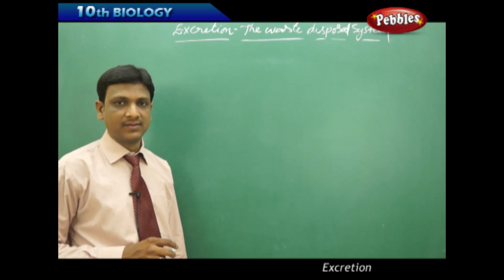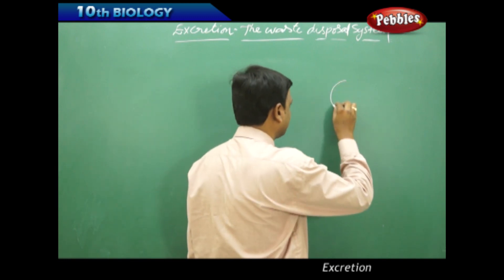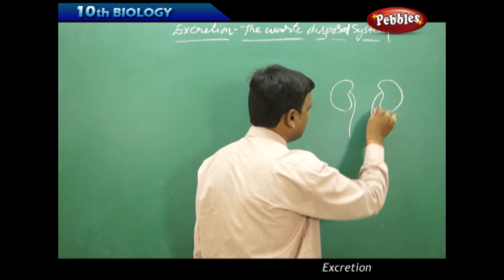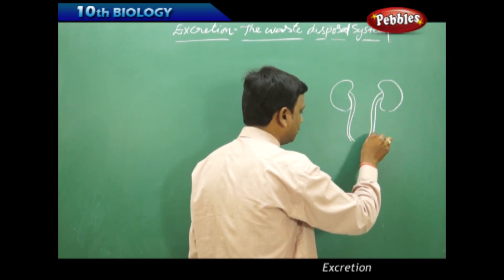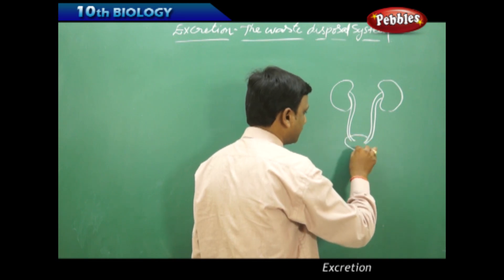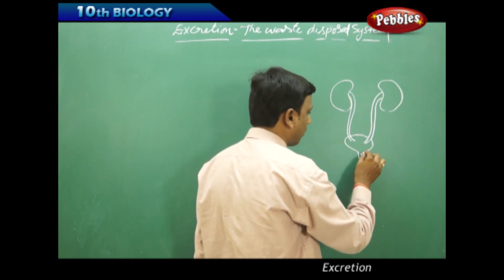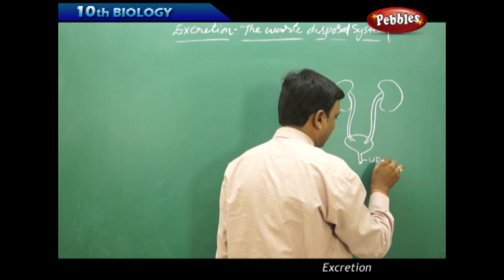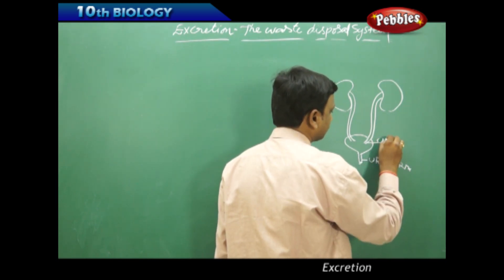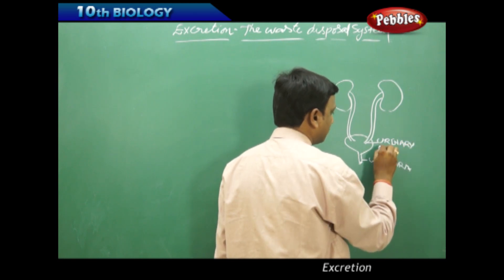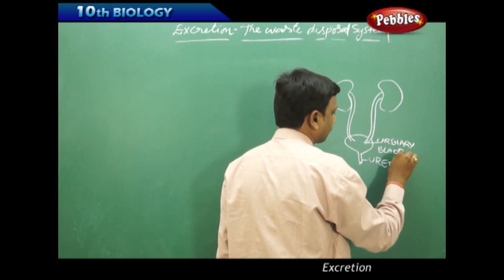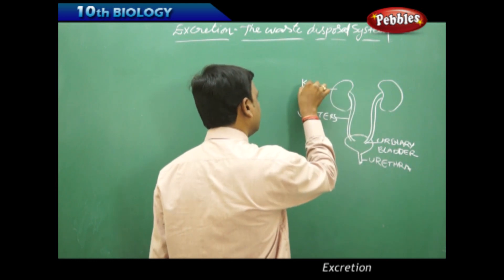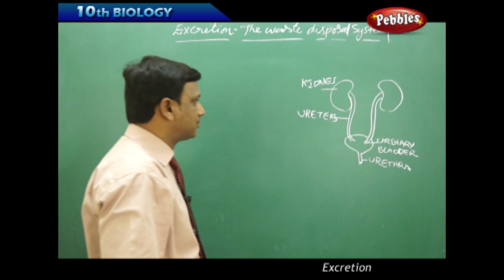The human excretory system chiefly consists of a pair of kidneys. From the kidneys, two tubes arise called ureters, and these ureters are connected to a sac-like organ called the urinary bladder. So the important parts of the human excretory system are: a pair of kidneys, a pair of ureters, and the urinary bladder.